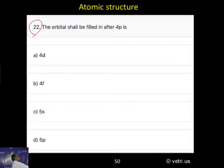22. The orbital shall be filled in after 4P is ___. After 4P, what is the orbital? Where the electron will go? A, 4D, B, 4F, C, 5S, D, 5P. Very very simple.